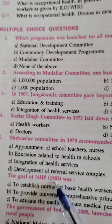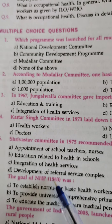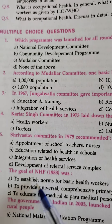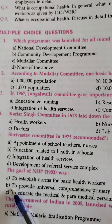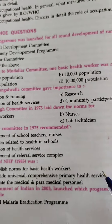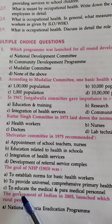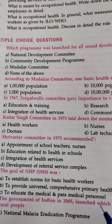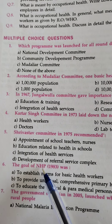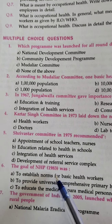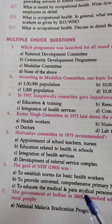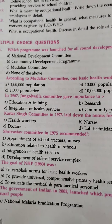The goal of the National Health Policy 1983 was to establish norms for basic health workers, to provide universal comprehensive primary health service, and to educate medical and paramedical personnel.